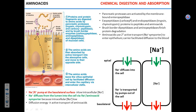Absorption — I will test you on the mechanisms of absorption. We're going to talk about absorption of three things: amino acids, carbohydrates, and lipids. I'll say a few words about nucleotides but won't ask about their absorption mechanisms. Proteins are first digested in the stomach by pepsin — hydrochloric acid is necessary as a catalyst. We have a large protein, it's broken into pieces in the stomach, but those pieces are not yet individual amino acids.